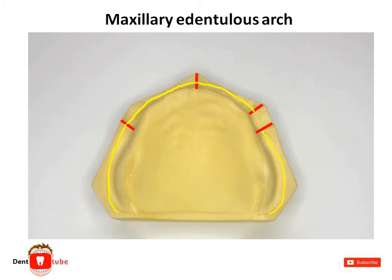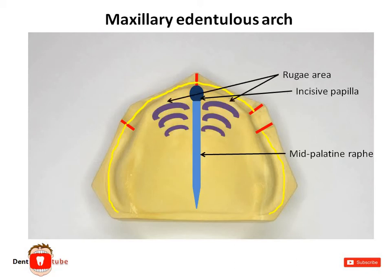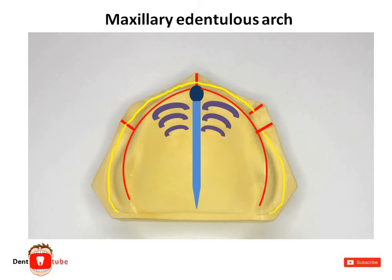A midline structure situated behind the position of the central incisors is called the incisive papilla. Another midline structure that extends behind the incisive papilla is the mid-palatine raphe. Some folded structures located in the anterior region of the palatal mucosa are the rugae. The highest portion of the alveolar ridge forms the crest of the alveolar ridge.